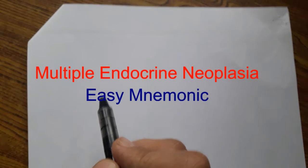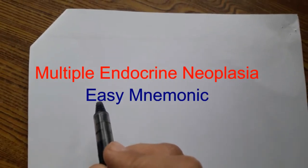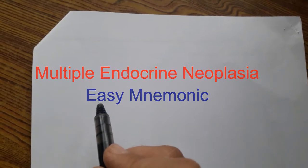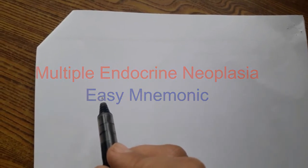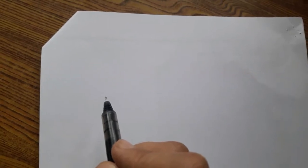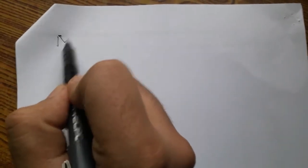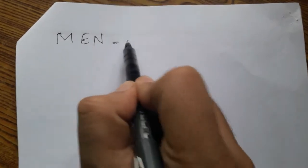Hello guys, in this video I'll show you how to remember multiple endocrine neoplasias easily. There are actually two types of multiple endocrine neoplasias: one and two, and two is again subdivided into 2A and 2B. I'll be showing you easy mnemonics for all of them, so let's start.